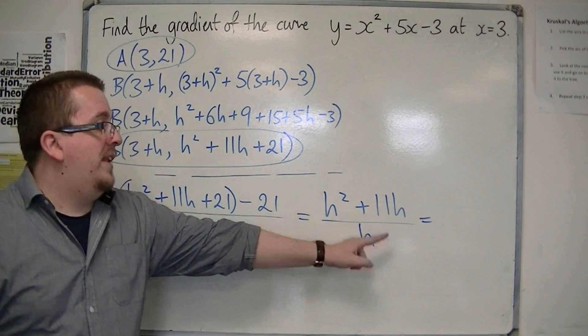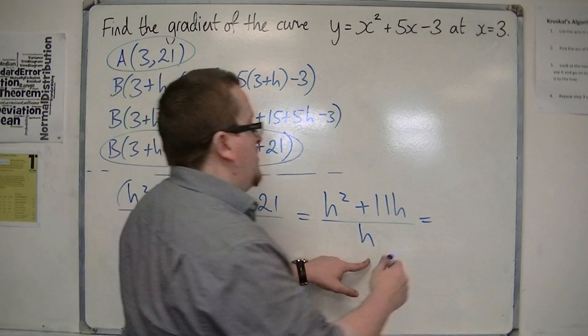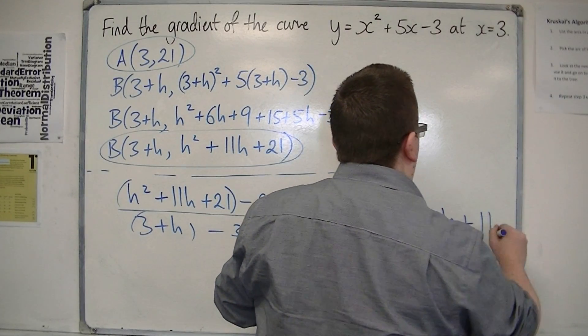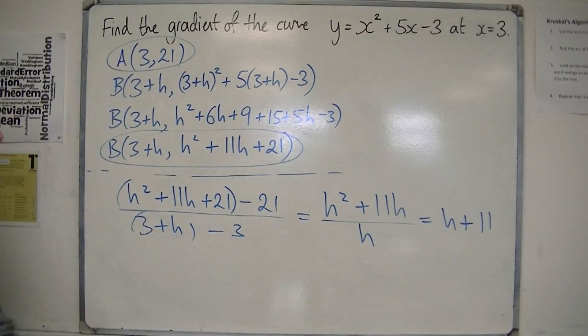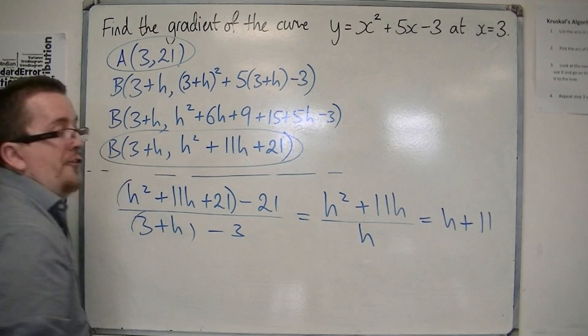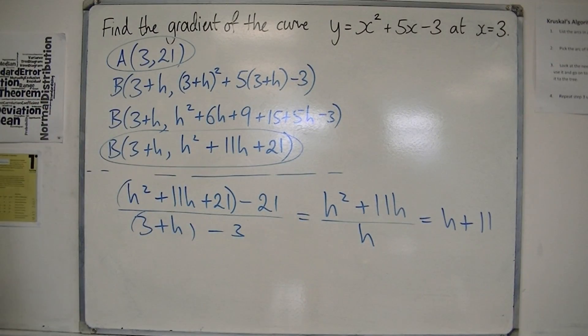So h squared plus 11h divided by h is just h plus 11. So this is the gradient of the chord between A and B.